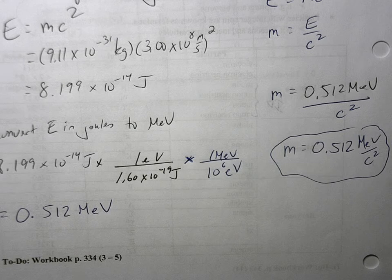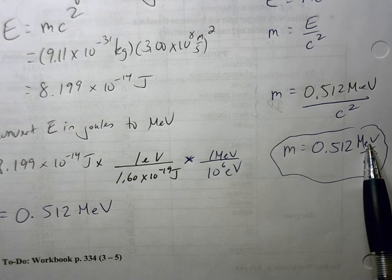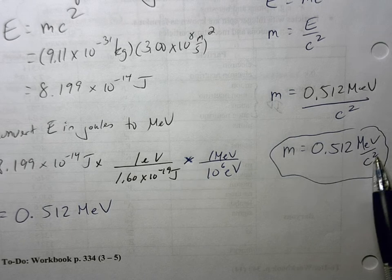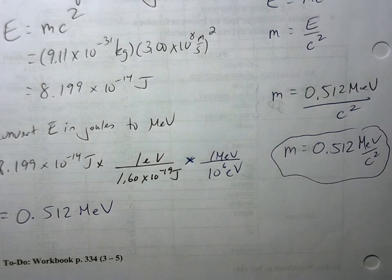And the reason that we like this, or the reason particle physicists like to have the mass in MeV per C squared, well, if you want to find the energy of this thing, you're just multiplying this quantity by C squared. Well, this quantity multiplied by C squared is going to get rid of this C squared and you're left with energy. So it's very convenient.